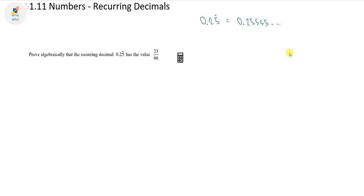You might look at this and think how do we deal with a number like this? The best technique is to actually call this value x. So we can say suppose our value x is actually equal to 0.255 recurring like this.